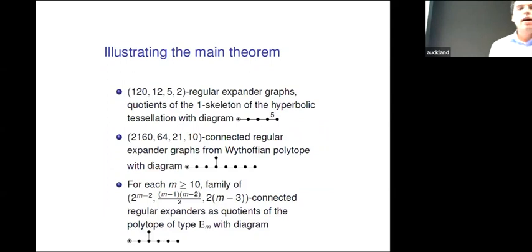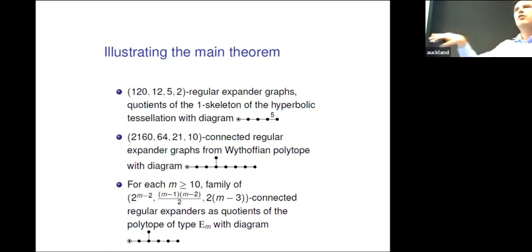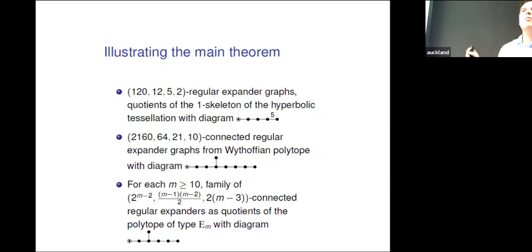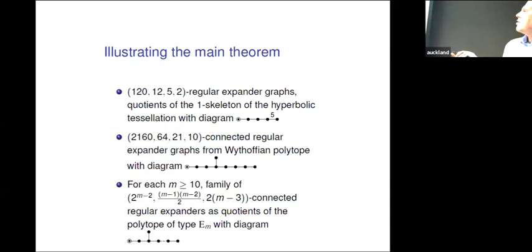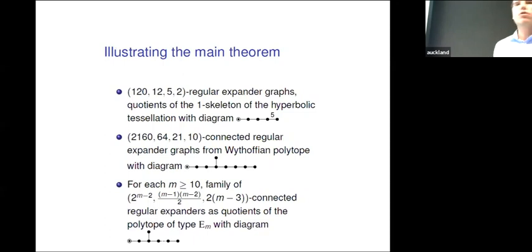Illustrating the main theorem: here is an example of a string Coxeter diagram where the diagram has no bifurcations, just a straight line. We can get regularity parameters 120, 12, 5, 2 — that's up to level four — from a hyperbolic tessellation in four-space. We can get even higher connected regular graphs from a Wythoffian polytope related to E8, coming from the 3_41 honeycomb. If we don't insist on connectivity, we can get one extra parameter at level 5. But otherwise it breaks down, and we have many other families obtained by exhaustively investigating Coxeter diagrams.